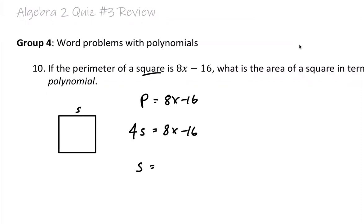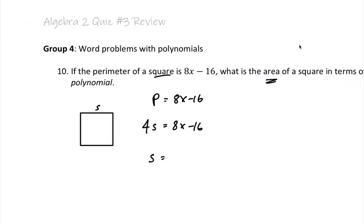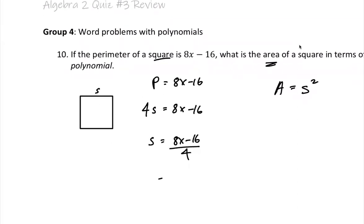So what you do to find out a single side, and why do we need to find a single side? Because we need to find out the area. An area is a side multiplying by itself for a square. So we just go ahead and divide this by four, and what you would get is 2x minus 4.